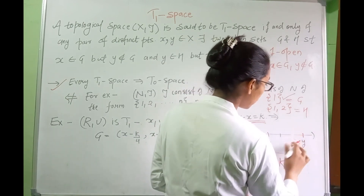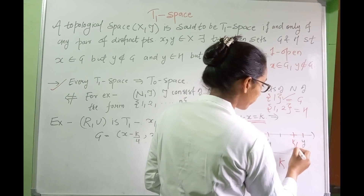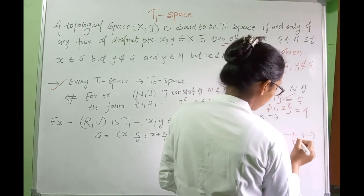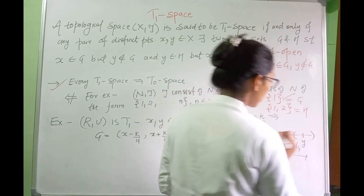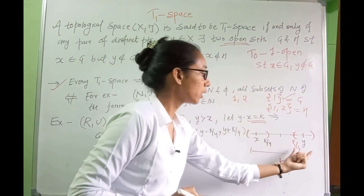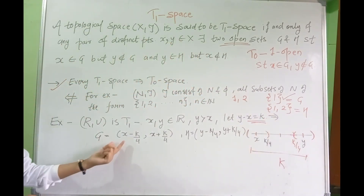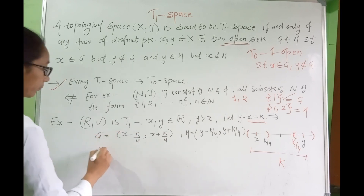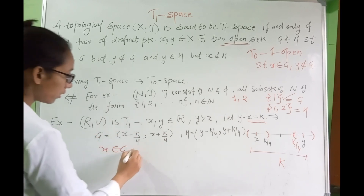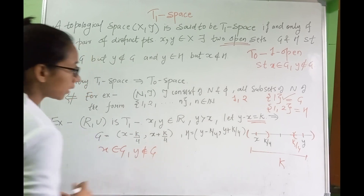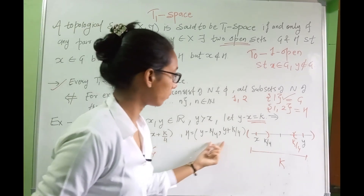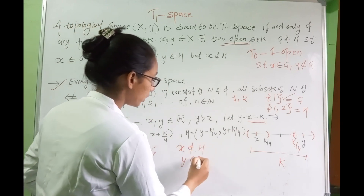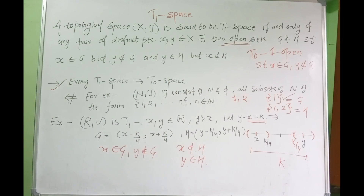You can make two open sets: G equals the open interval (X minus K/4, X plus K/4), in which X belongs but Y does not. And H equals the open interval (Y minus K/4, Y plus K/4), in which X does not belong but Y belongs. These two sets are distinct and satisfy the T1 condition, so this is your T1 space.